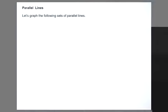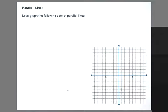Parallel lines. Let's graph the following sets of parallel lines. We need a coordinate plane and some pairs. We have y = -1/3x + 1. It's going to have a y-intercept of 1 and a shallow negative slope.